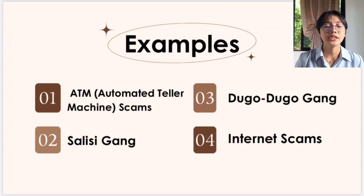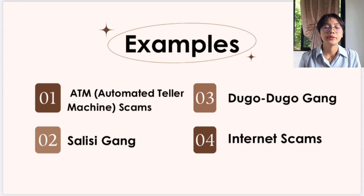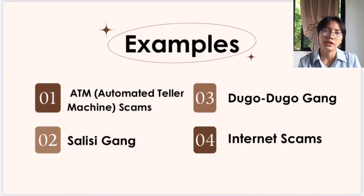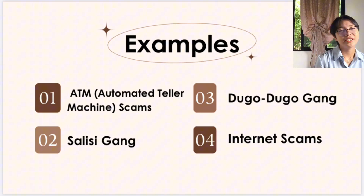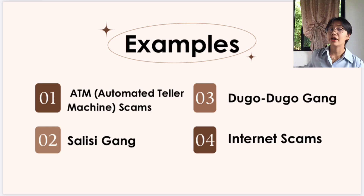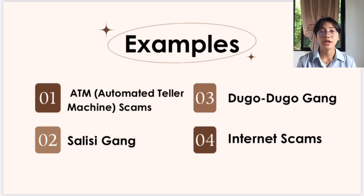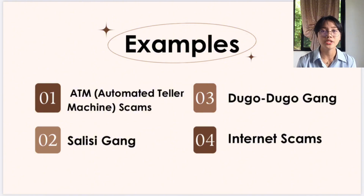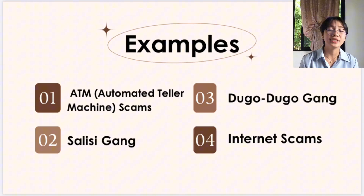The signature aspect remains constant and enduring for each offender. Examples of modus operandi include ATM scams, the salisigang dugo-dugo scheme, and internet scams. For ATM scams, a scammer will pretend to help someone who does not know how to operate the machine, and then take money from the victim's account without them knowing.